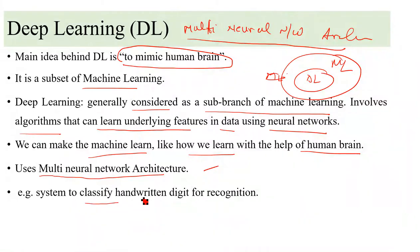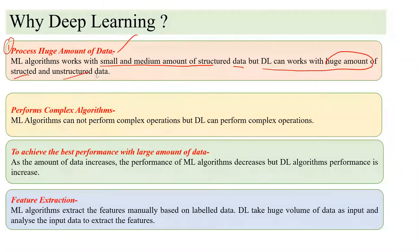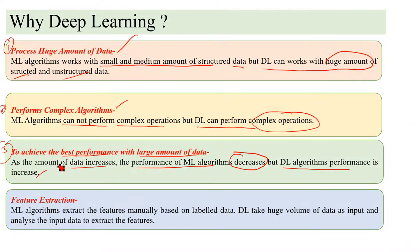An example of deep learning is classifying handwritten digit recognition. There are four important reasons to use deep learning. First, it can process huge amounts of data — machine learning algorithms work with only small and medium amounts of structured data, but deep learning can work with huge amounts of structured and unstructured data. Second, deep learning can perform complex operations that machine learning algorithms cannot. Third, as the amount of data increases, deep learning performance increases while machine learning performance decreases.